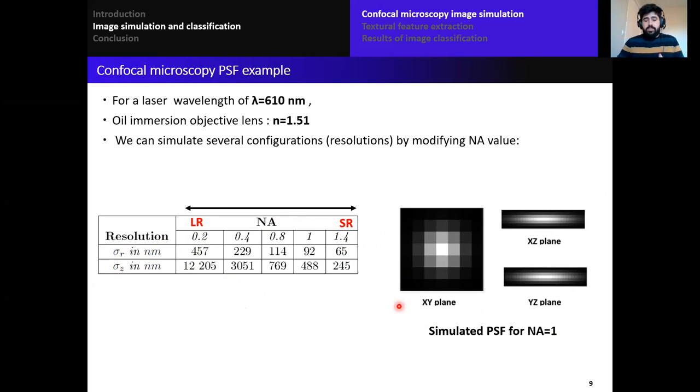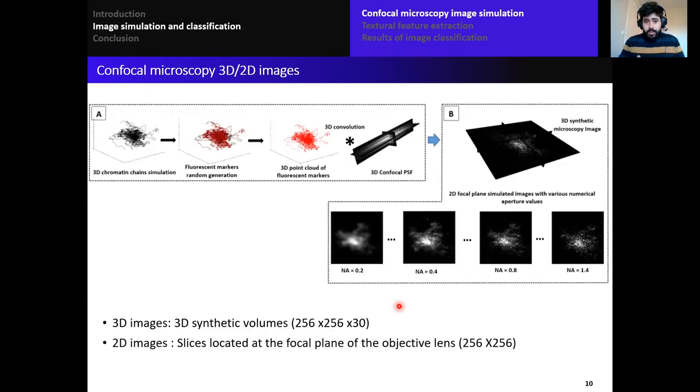This means that we have lower values of sigma r and sigma z. Here I show the three orthogonal planes of a simulated PSF for numerical aperture equal to 1. With this methodology of modeling, we can simulate several PSFs for each NA value and we can have different resolutions. Like that, the output images will have different resolutions also.